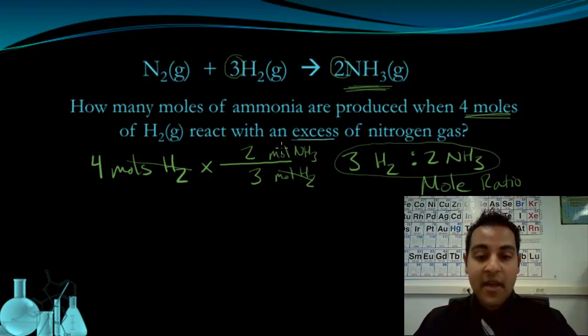So I have my math set up now. Four times two, divided by three, moles of ammonia. That's going to give me 2.67, roughly, moles of ammonia, produced if I start with four moles of hydrogen.